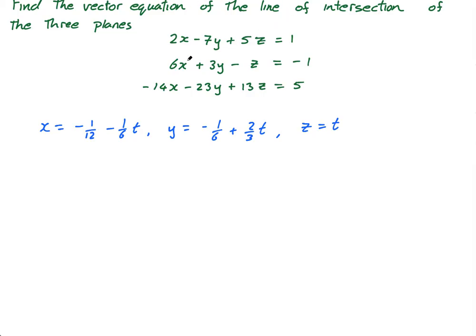And we can write this. They want, they say find the vector equation of the line. So we want to write this in this form. So I have negative a twelfth, negative a sixth and zero plus T times negative a sixth, two thirds. Sorry, just two thirds because the T is here. And then one. And this, when we draw this, this is the equation of the line that passes through them.